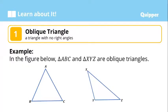To start our session, let us first define what an oblique triangle is. An oblique triangle is a triangle with no right angles. For example, in the figure below, triangle ABC and triangle XYZ are oblique triangles.